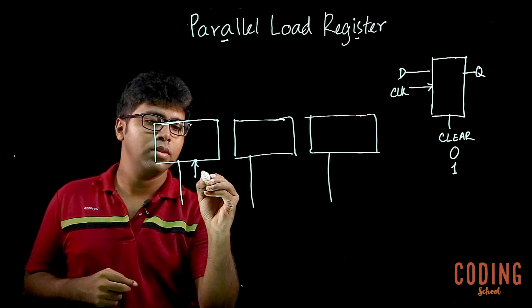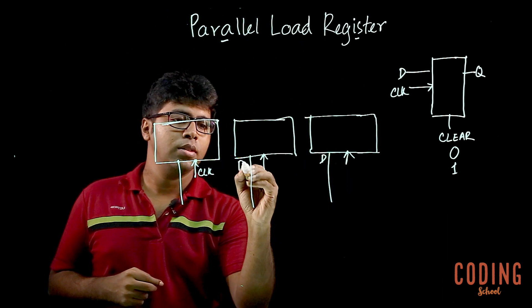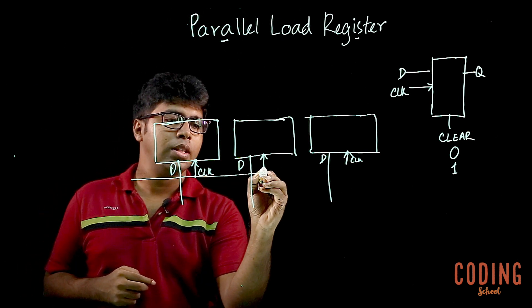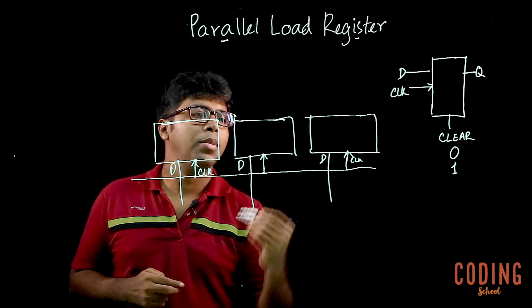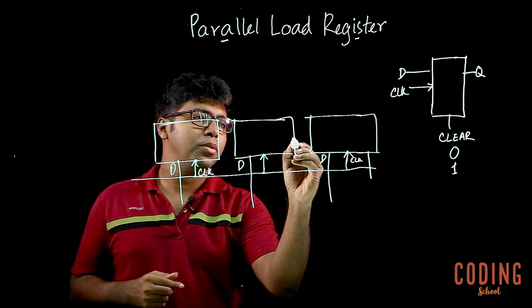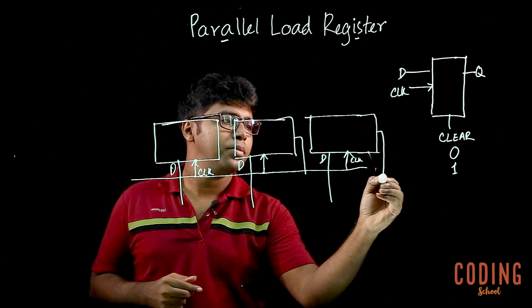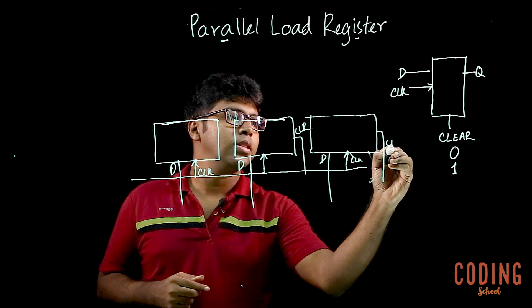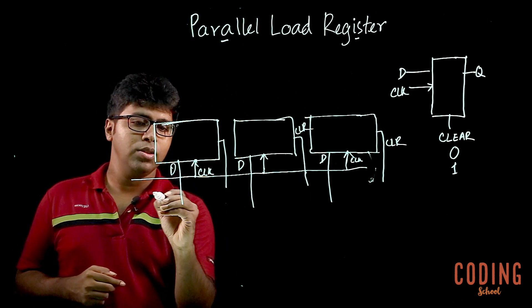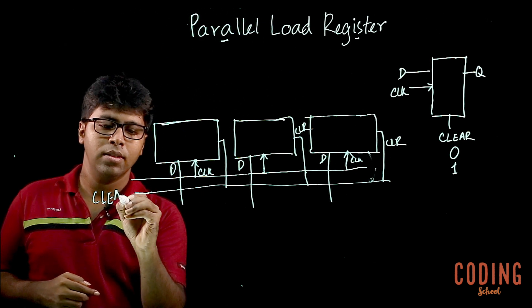When we have a clock signal, we have the clock pulse. I will show you the clear bit. We will see the clear bit, and I will show you the clock.